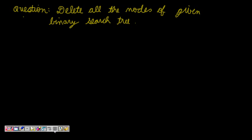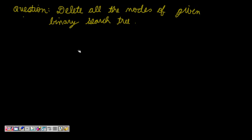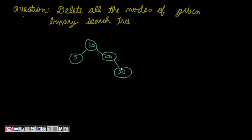Our question is to delete all the nodes of a given binary search tree. Let's try out a binary search tree and think of the solution. I'll draw a BST — let's say I have 10 here, 5, then 20, 30, and 25. We can add a few more nodes: 45, 2, and 7. So this is my tree.